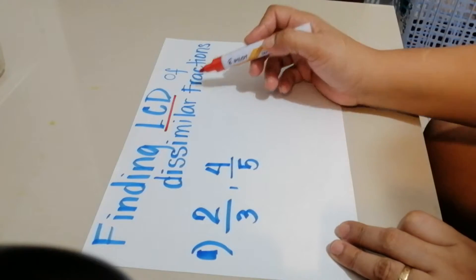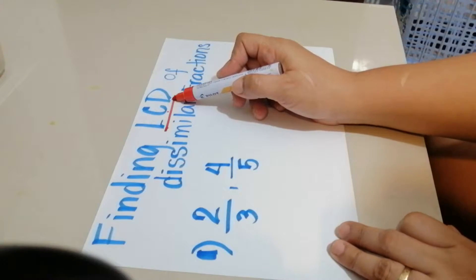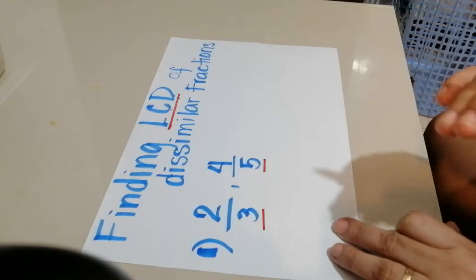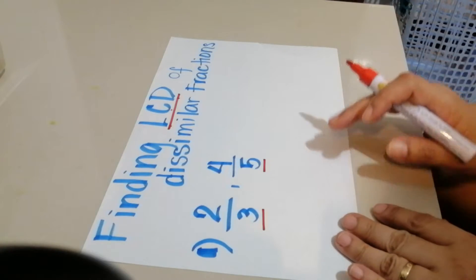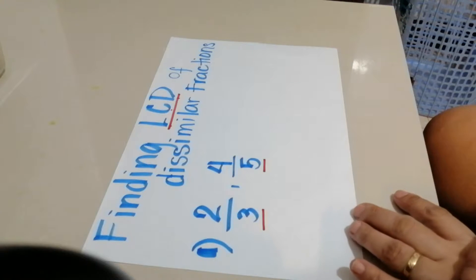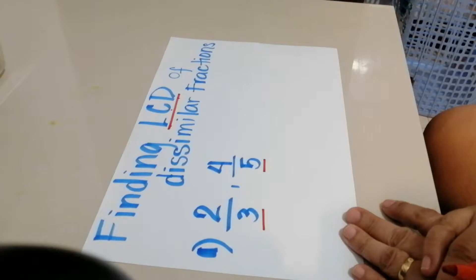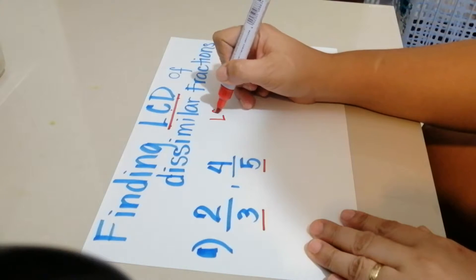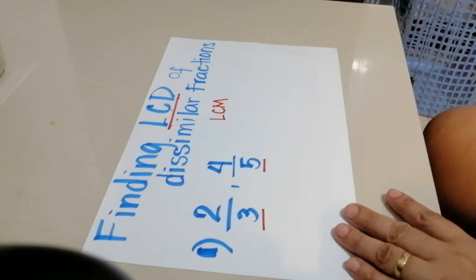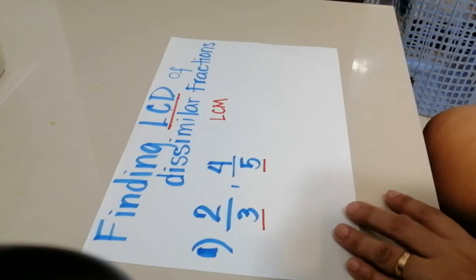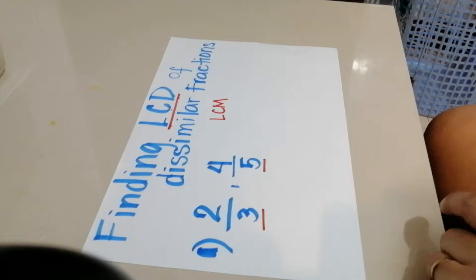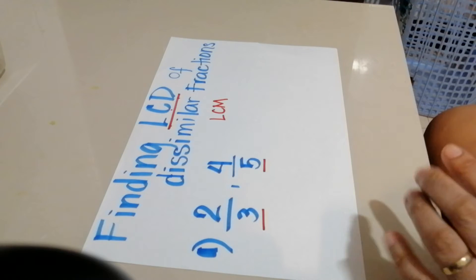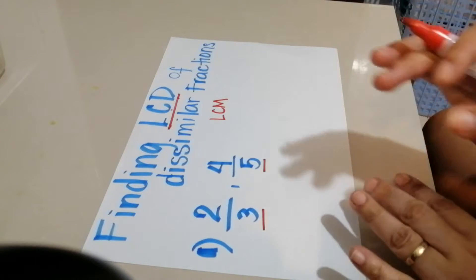That is the rule when we add and subtract fractions — we cannot add fractions unless they have the same denominator. So this time, I'll be discussing finding the LCD, which stands for least common denominator. We can find the LCD of dissimilar fractions using two ways: using the LCM and using listing.